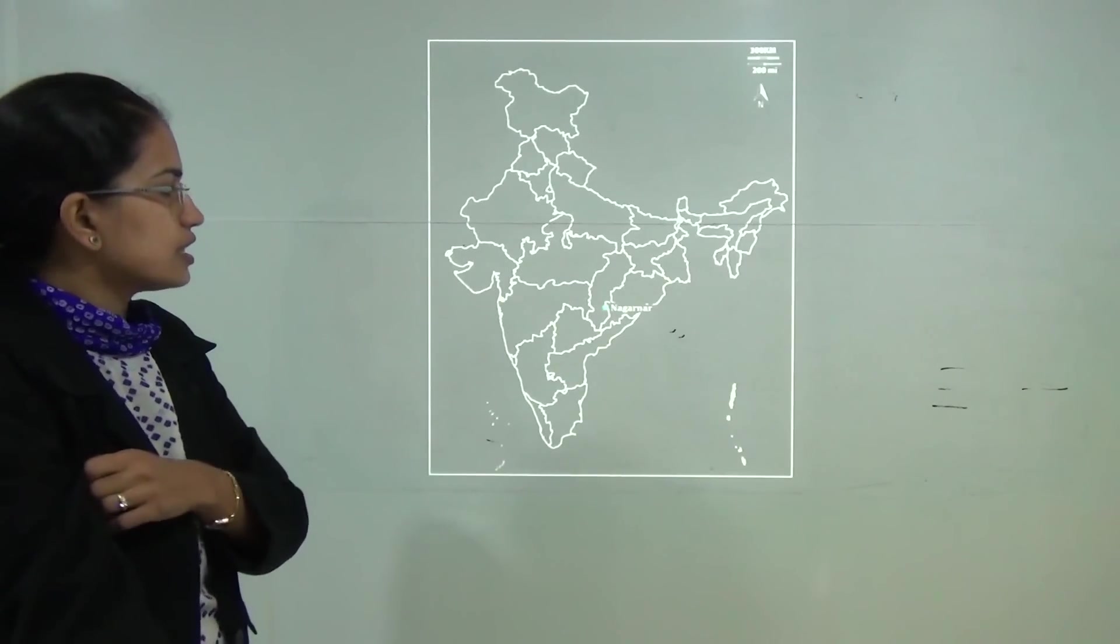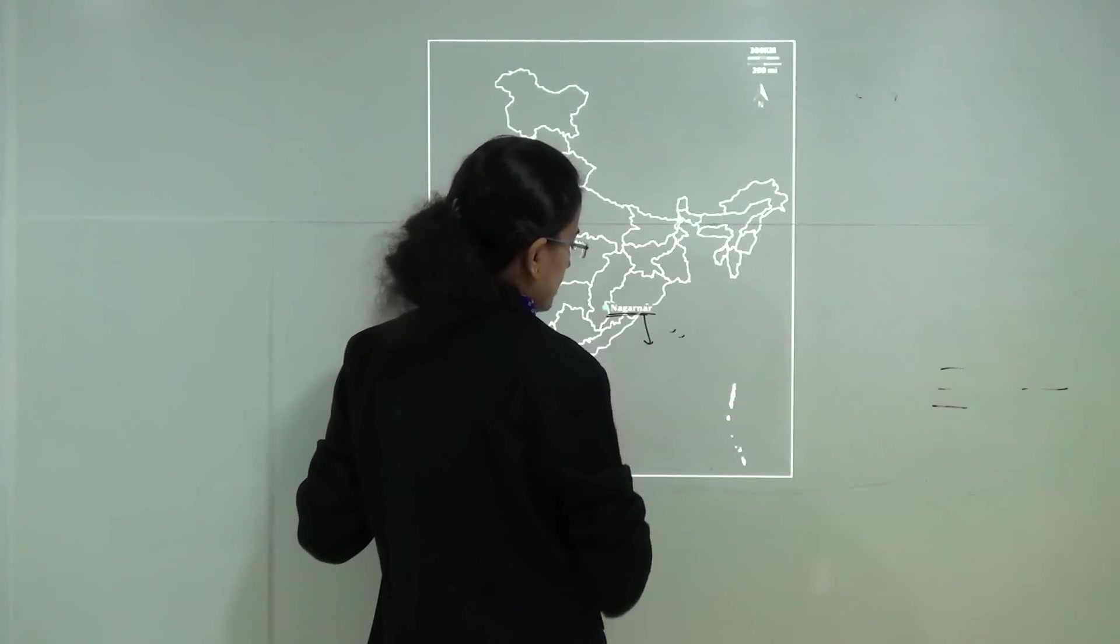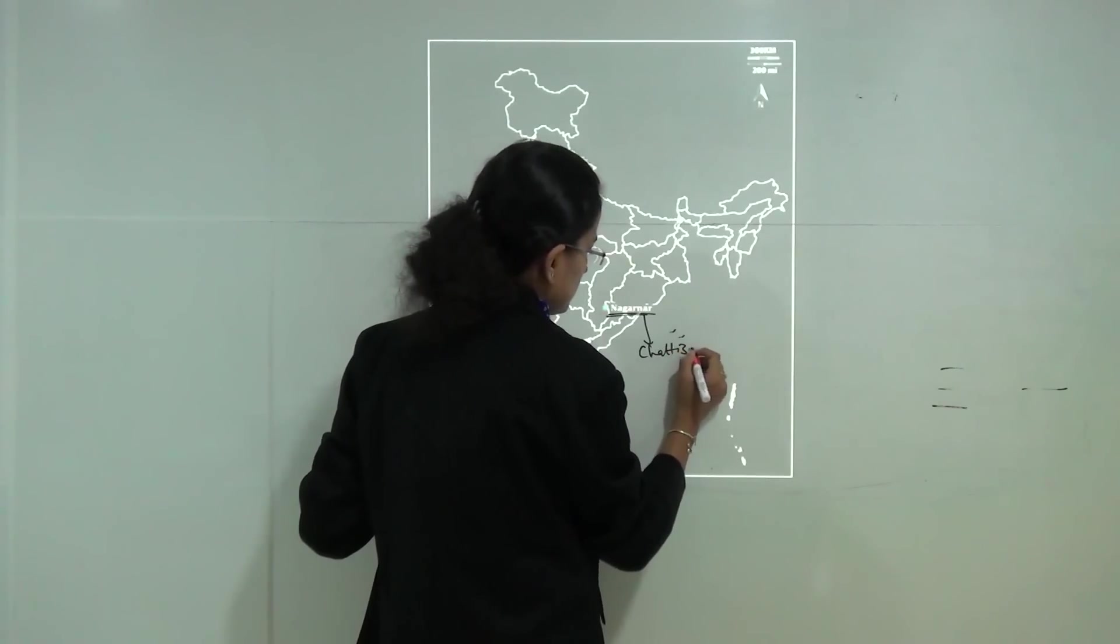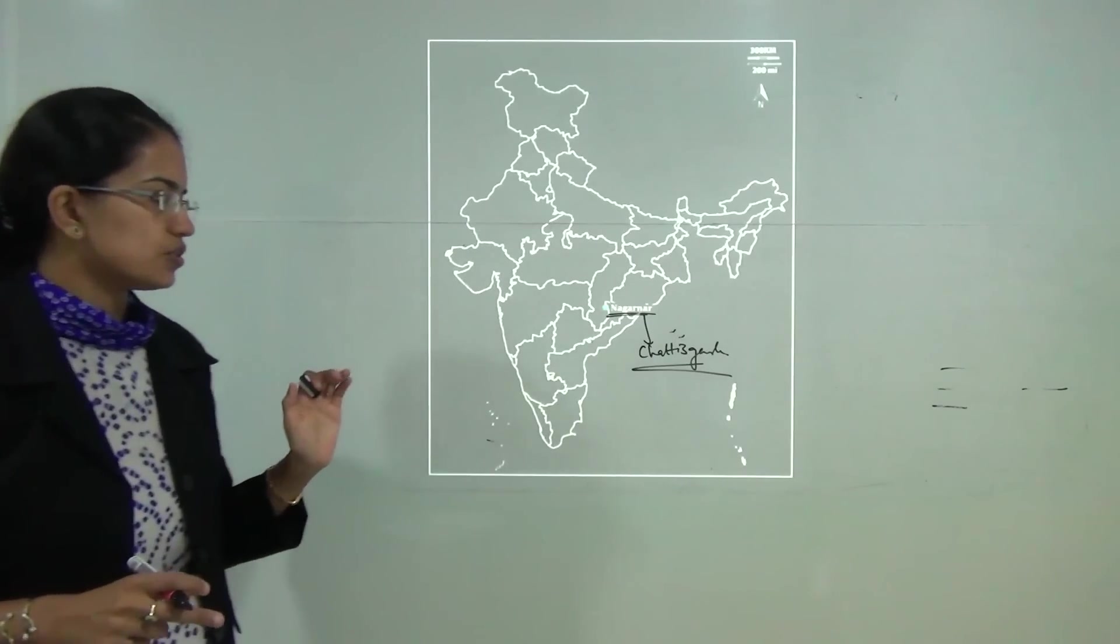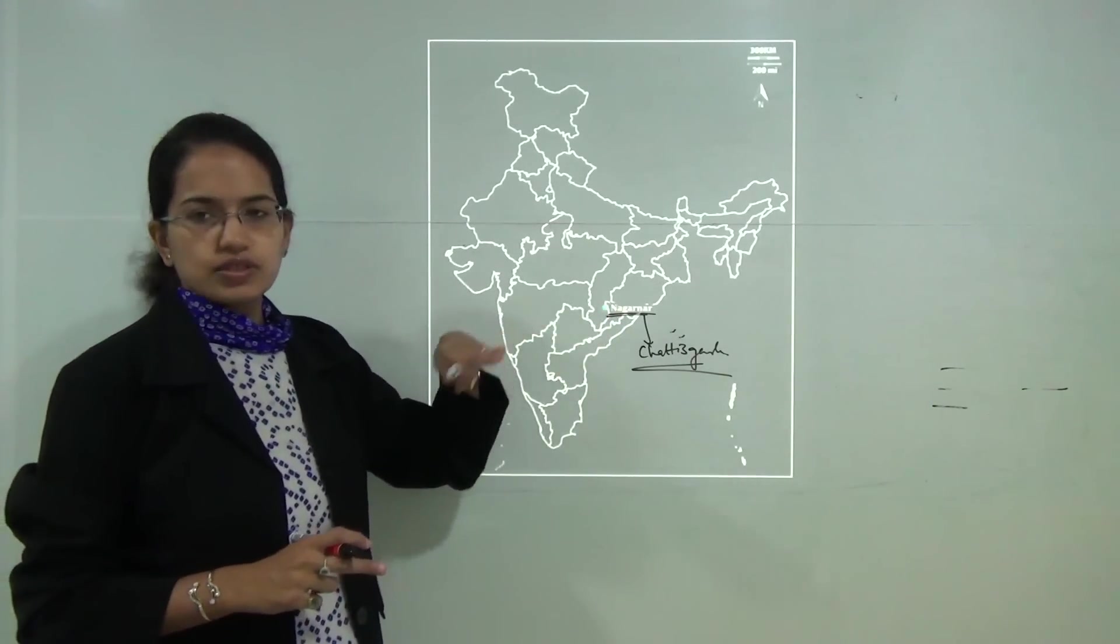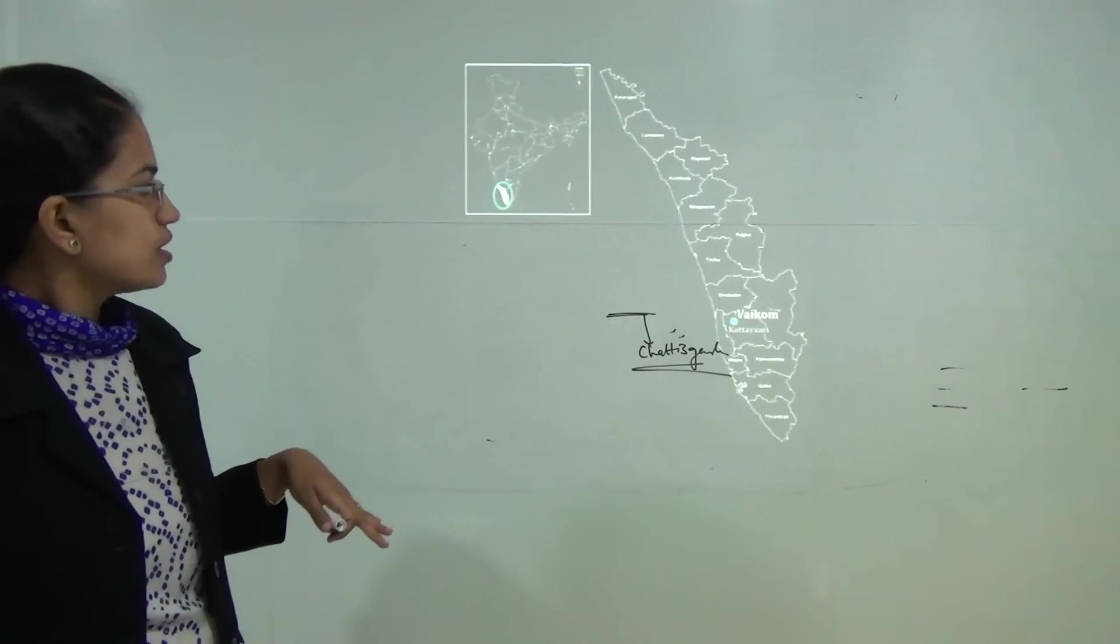The next is Nagarnar steel plant. Nagarnar steel plant has recently been started and been commissioned in Chhattisgarh. Chhattisgarh was separated from Madhya Pradesh in 2000 and Nagarnar is one of the steel plants that is being established here.